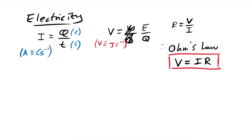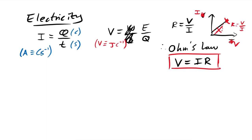When you have a V-I graph, to find resistance don't use the gradient — instead take a point on the graph and calculate V/I. The gradient can indicate how resistance is changing, but doesn't give the resistance itself.